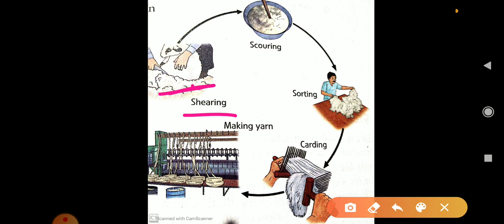Next process is scouring. The wool taken directly from the sheep is called raw or grease wool. It contains fat, dirt, grease, vegetable matter, and dried sweat and requires thorough cleaning. It is cleaned in a large tub or container, washed with the help of detergent, and then dried.